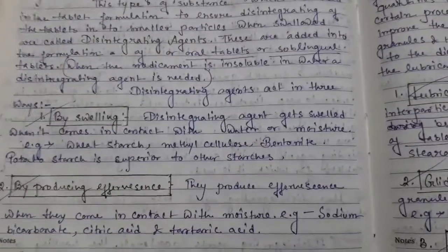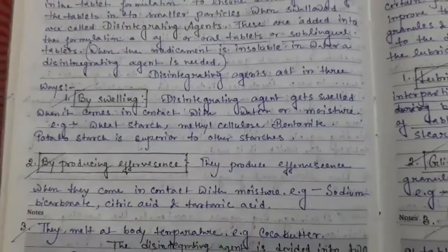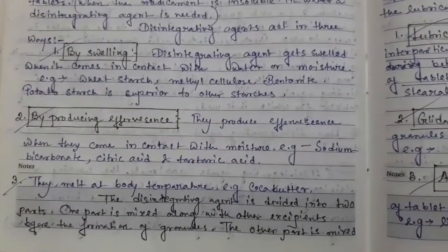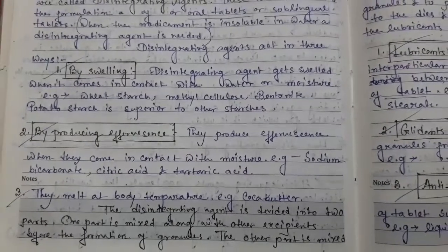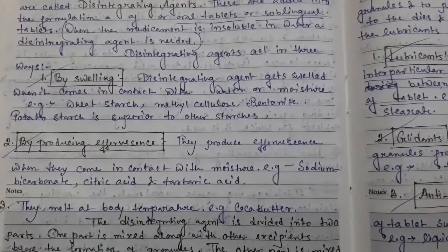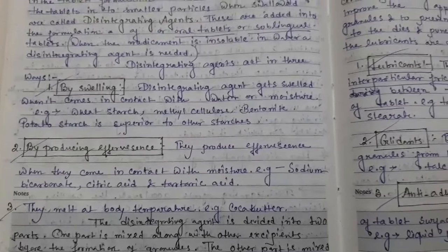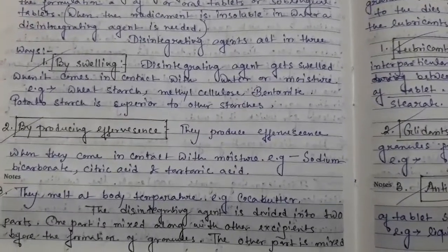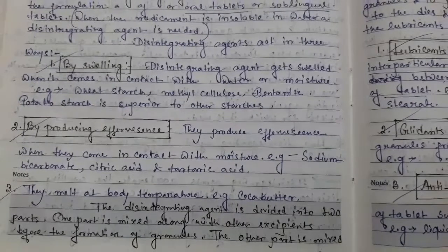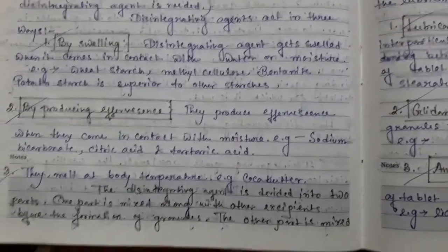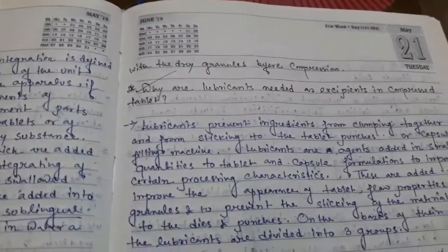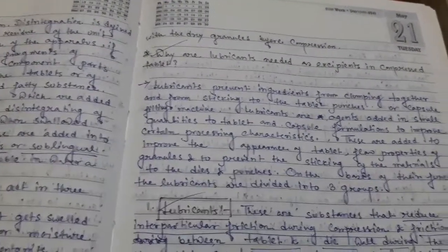Disintegrating agents act in three ways: by swelling, by producing effervescence, and by melting at body temperature — for example, cocoa butter. The disintegrating agent is divided into two parts: one part mixed along with other excipients before formation of granules, and another part mixed with the dry granulation before compression.